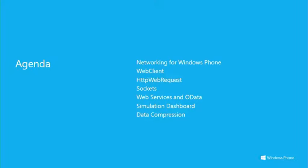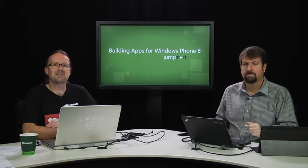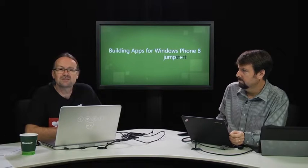Data compression is very important for making a good quality network connection — making sure you're using compression on the wire. Phones run on crappy networks most of the time, so anything you can do to minimize the amount of data traffic and bytes you require to transmit is a good thing. Also not on the agenda — added at the last minute — is a quick introduction to Azure Mobile Services, a new thing from the recent Build conference.